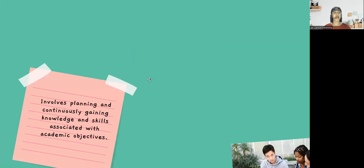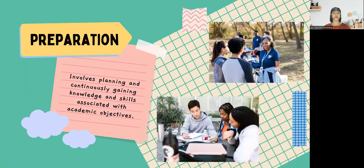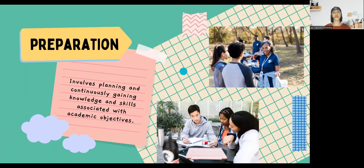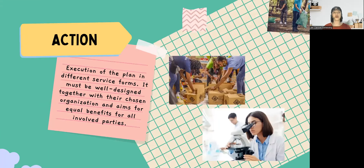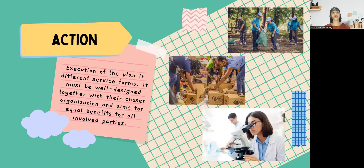Next, let's have P for preparation, which involves planning and continuously gaining knowledge and skills associated with academic objectives. For students to achieve this, it will be possible by undergoing service and finding their target community, partners, and clients that are related to their concern or the problem they want to address.